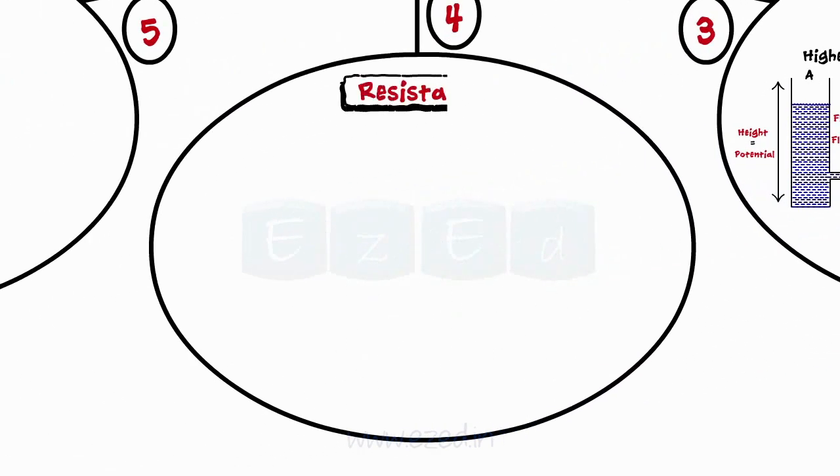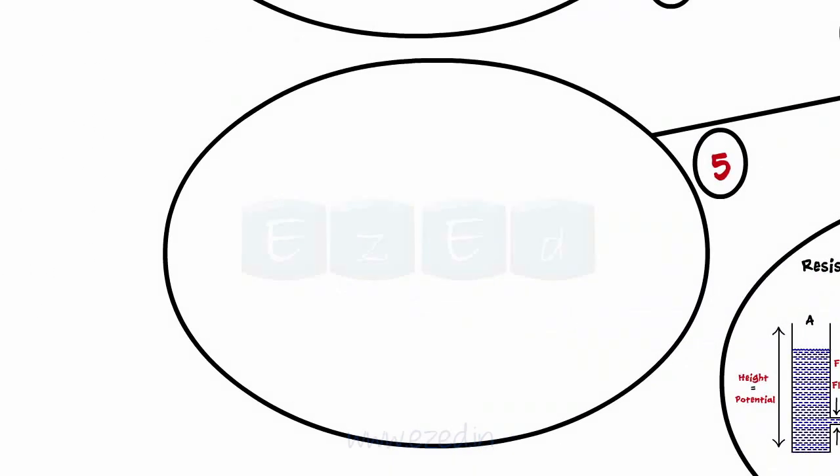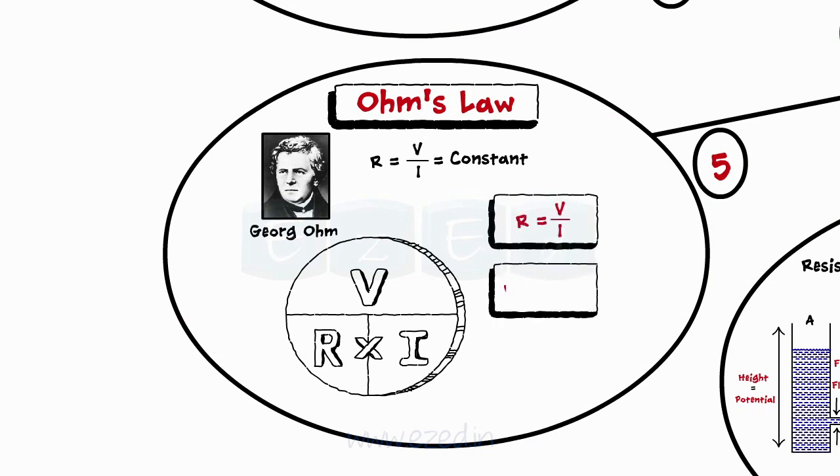Resistance is defined as the opposition to the flow of current. The formula for which is R is equal to rho into L upon A and is measured in Ohm. This resistance greatly depends on temperature too. George Ohm stated the law that under normal conditions, the ratio V upon I remains constant and is called as resistance R represented as R equals V upon I, V equals I into R and I equals V upon R.